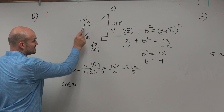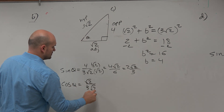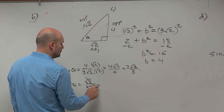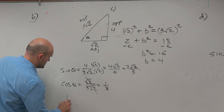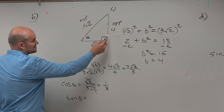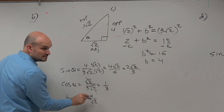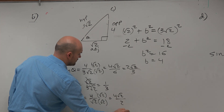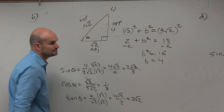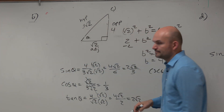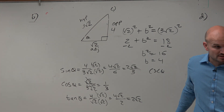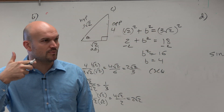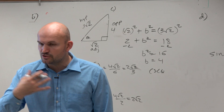For cosine, that's adjacent over hypotenuse. The square root of 2 divides out — everything's separated by multiplication — and what goes on top is 1. And then tangent is opposite over adjacent. We don't want a radical in the denominator, so we rationalize: 4 square root of 2 over 2 simplifies to give you 2 square root of 2. Now we've shown our work. This is the work I'd like you to show and get used to, so we can all practice rationalizing the denominator.